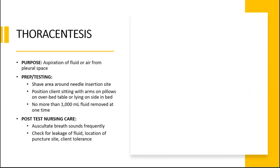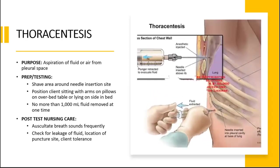With thoracentesis, you want to aspirate fluid or air from the pleural space for specimen analysis, relieve lung compression, obtain lung tissue for biopsy, or instill medication into the pleural space. Explain the procedure, take vital signs, and shave the area around the needle insertion site. Position the client sitting with arms on a pillow on an overbed table, or lying on their side. Let the client know to expect a stinging sensation from the local anesthetic and pressure when the needle is inserted.